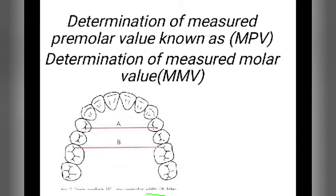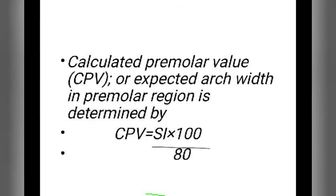The calculated premolar value, or CPV, represents the expected arch width in premolar region and is determined by CPV equals SI times 100 divided by 80, where SI is the sum of incisors.